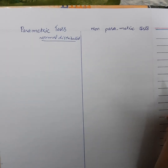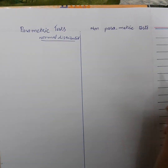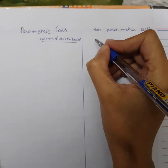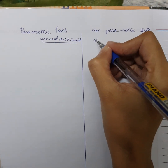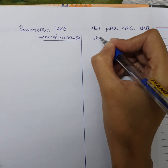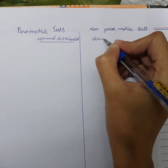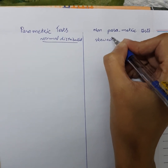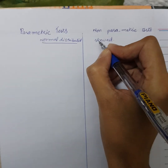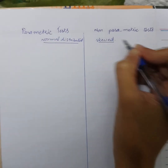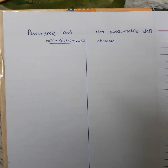Non-parametric tests are used when the data is skewed. What is skewed distribution? We have already explained this in one of the previous videos.